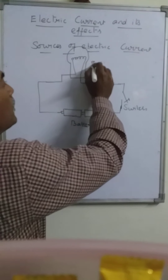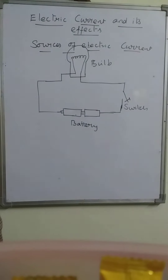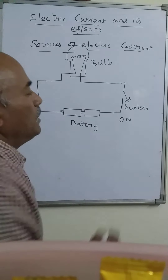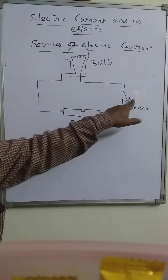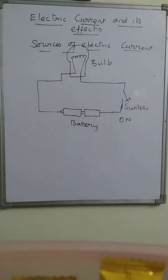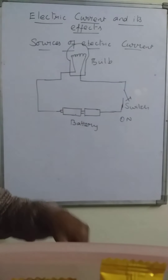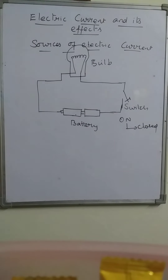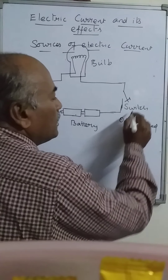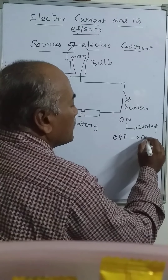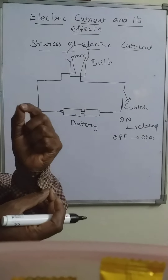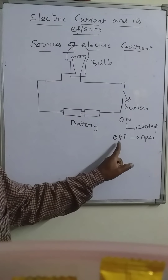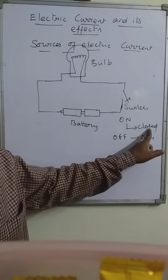So we have three components: battery, the bulb, and the switch. When we switch it on, the switch has to be in touch with the wire. When we switch it on, we say the switch is in the closed condition. If we keep the switch in the off position, then it is in the open condition — there will be a slight gap between the two terminals. Open means off position; closed means on position.